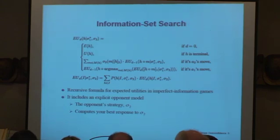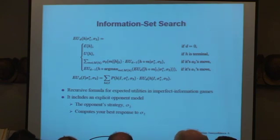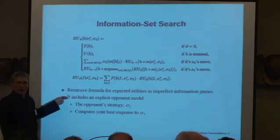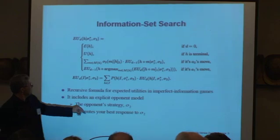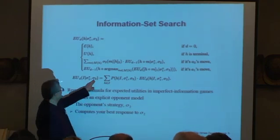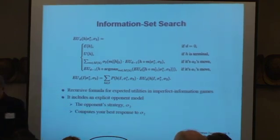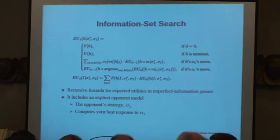We put together a recursive formula for searching over the information sets. I'm going to skip the technical details, except to point out that it includes an explicit model of the opponent — namely the opponent's strategy, which appears here in the formula. Given this strategy, it will compute your best response to that strategy. But where do we get this model from?